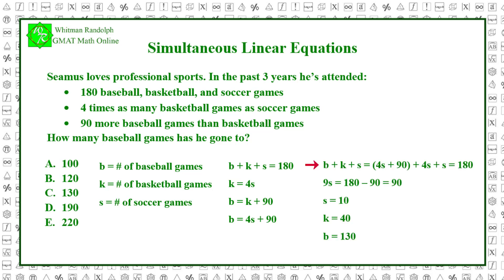So b plus k plus s equals 4s plus 90 plus 4s plus s, and that equals 180. 9s equals 180 minus 90, which equals 90. Therefore s equals 10, k equals 40, and b equals 130. So the correct answer is c.